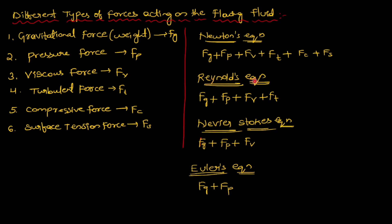Coming to Reynolds equation: gravitational force, pressure force, viscous force, and turbulent. Coming to Navier-Stokes equation: gravitational force, pressure force, and viscous force. And during the derivation of Euler's equation of motion, we consider gravitational and pressure force. Please remember all these things.